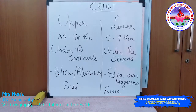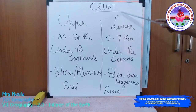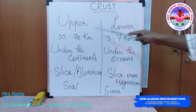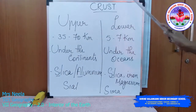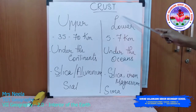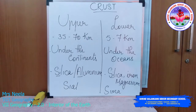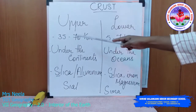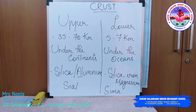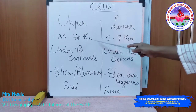The topmost layer is the crust. The crust of the earth's surface is divided into the upper and the lower crust. It is the thinnest layer of all and it contributes about one percent of earth's volume. The upper crust is about 35 to 70 kilometers in thickness.